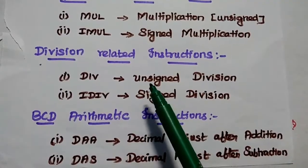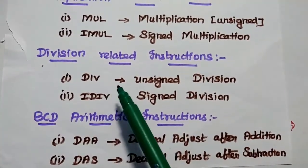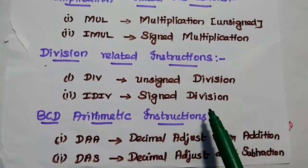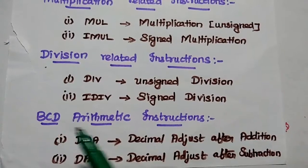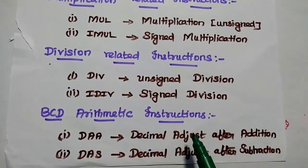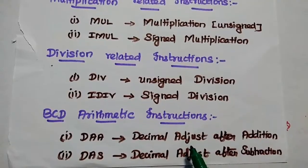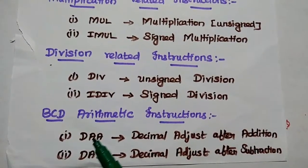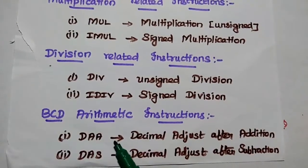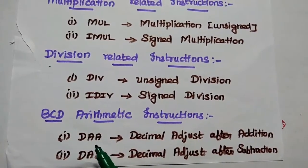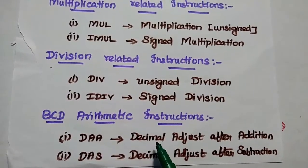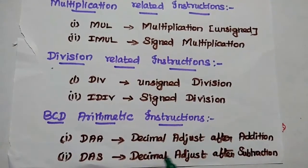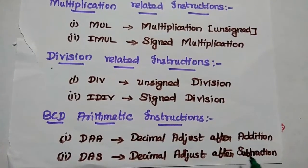Next are Division-related instructions. DIV represents Unsigned Division. IDIV represents Signed Division. BCD Arithmetic Instructions: since BCD Addition and Subtraction is entirely different from Normal Addition and Subtraction, we have separate instructions called DAA — Decimal Adjust After Addition — and DAS — Decimal Adjust After Subtraction.